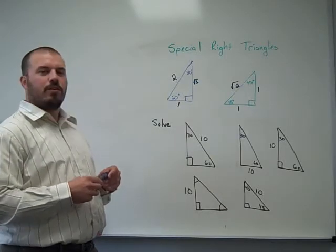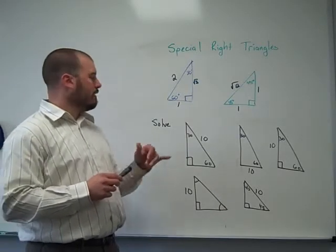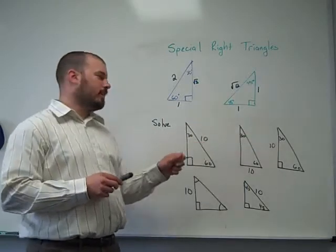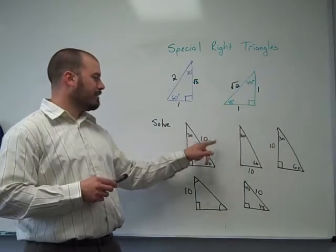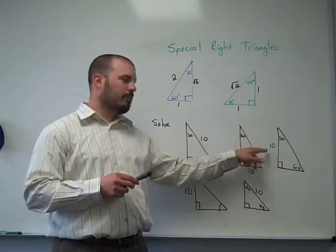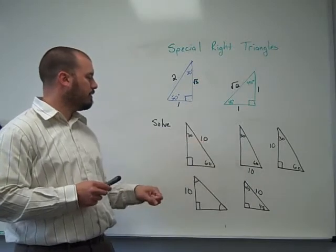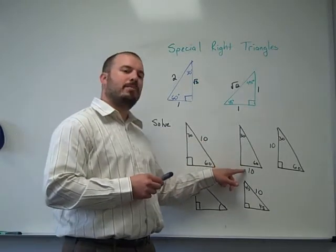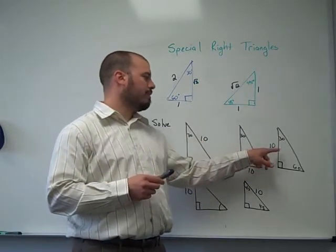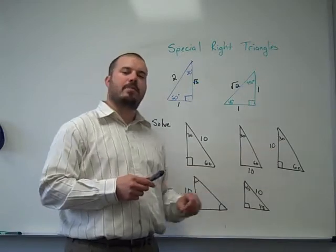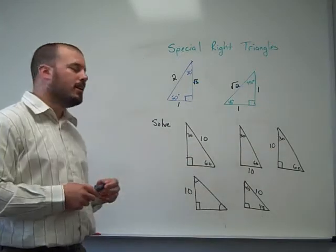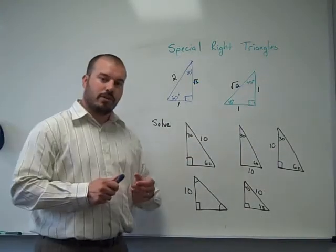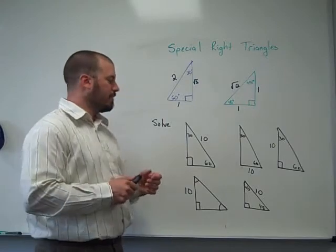What we need to find are the lengths. For our 30-60-90 triangles, I've set up each of these with the same side length but in different spots. So the hypotenuse in this case is 10, the side opposite of 30° is 10 in this one, and the side opposite of 60° is 10. All of the triangles, however, are still going to be different.